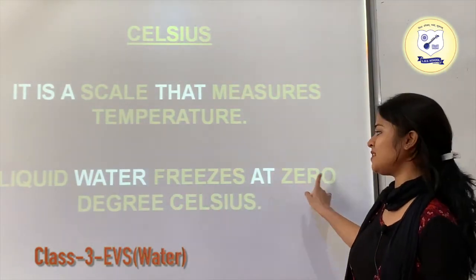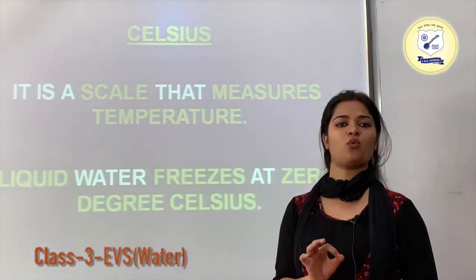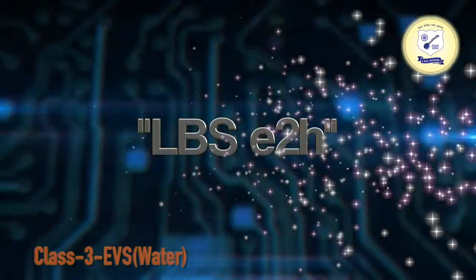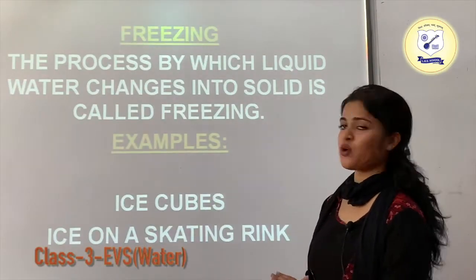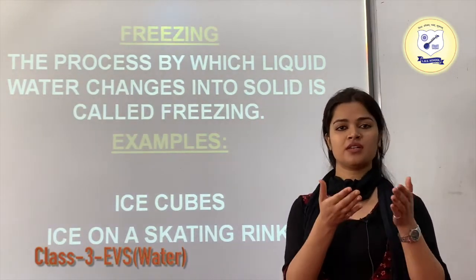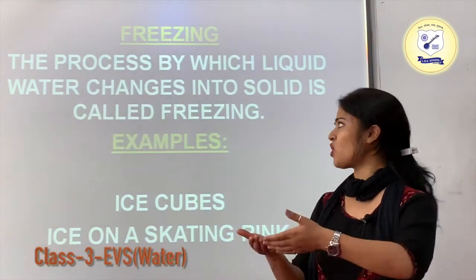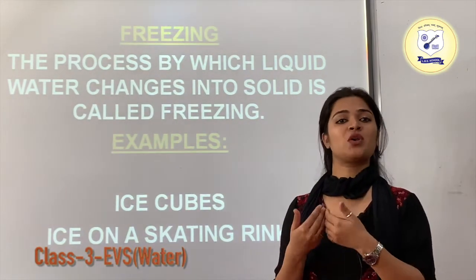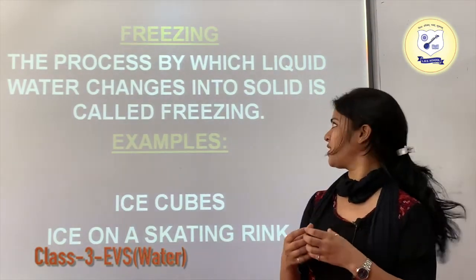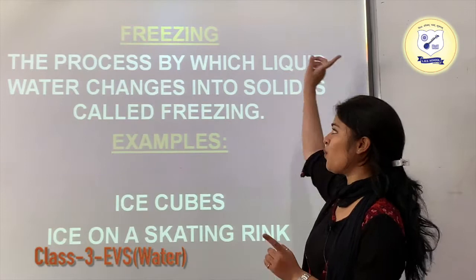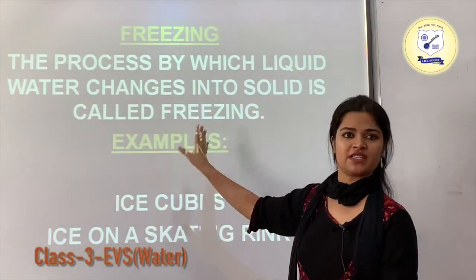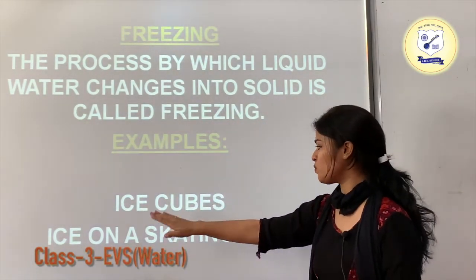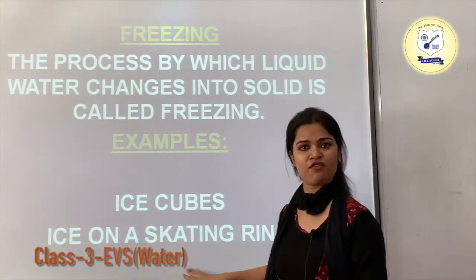Liquid water freezes at 0 degrees Celsius. Freezing is the process of converting liquid form into solid form — like freezing ice cream from a viscous liquid into solid. The process by which liquid water changes into solid is called freezing. Examples include ice cubes and ice on a skating rink.